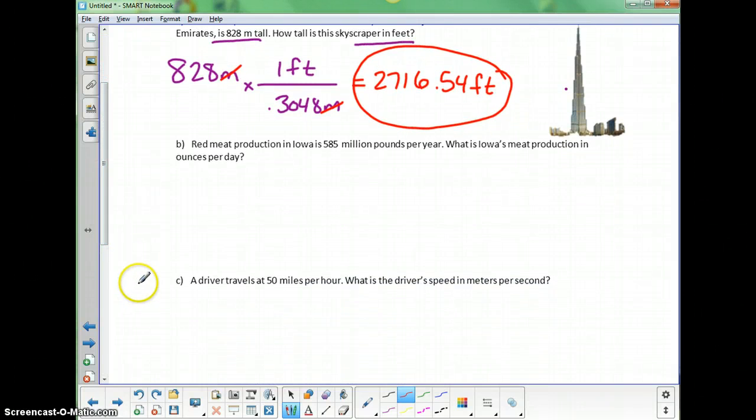This one says that red meat production in Iowa is 585 million pounds per year. Let's make sure we write all these units down correctly: 585 million pounds. Then when it says per, remember that per is a division word. That's going to go underneath the division line right here. Per year.